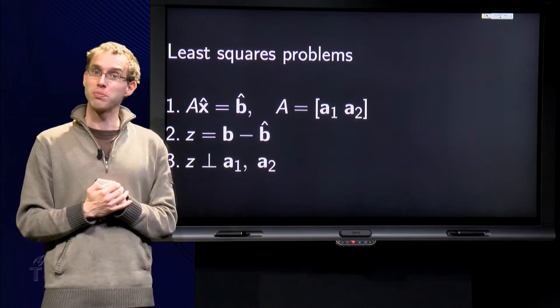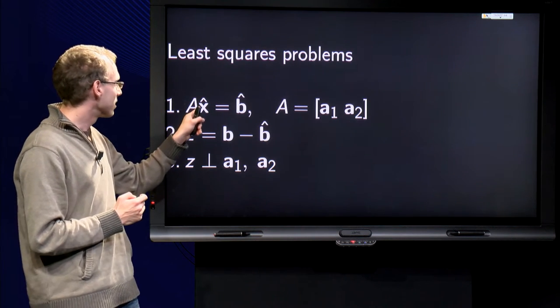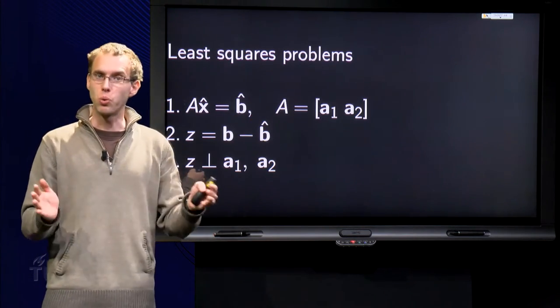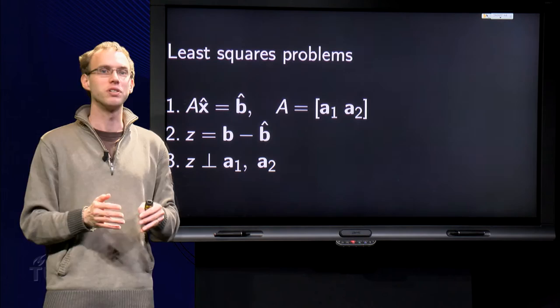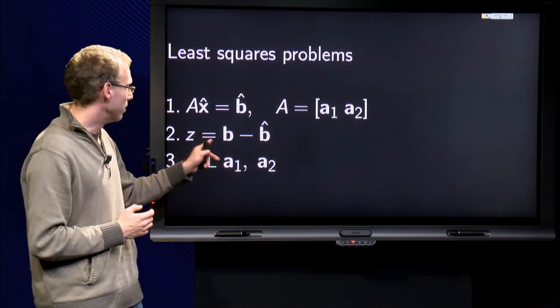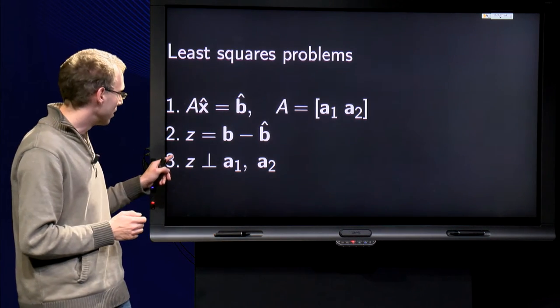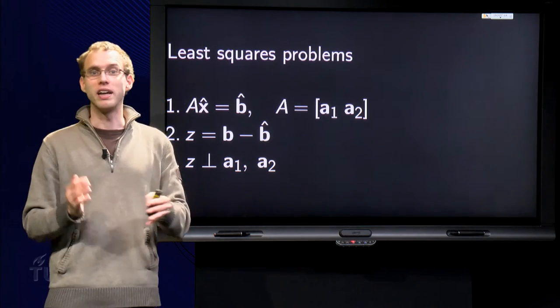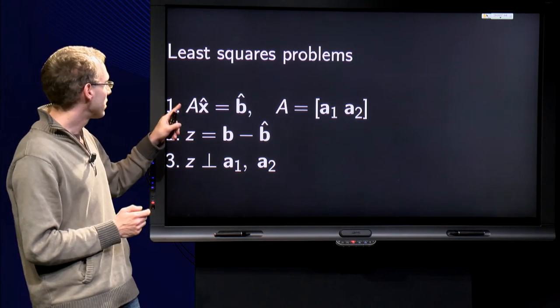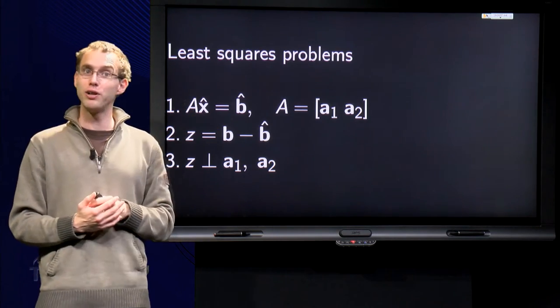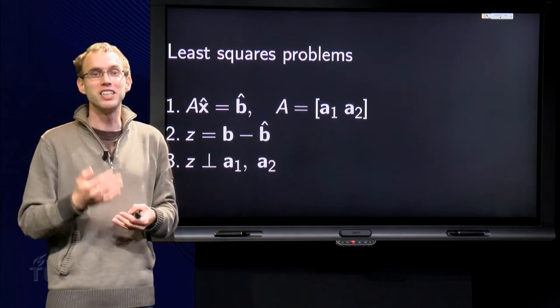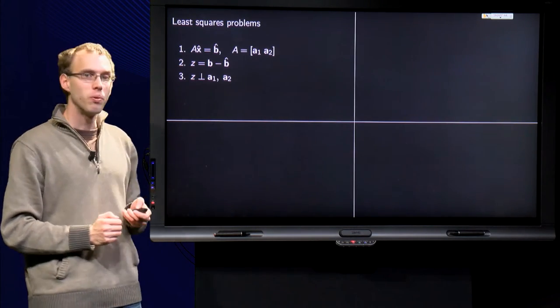So, what is our least squares problem? We have A times x hat equals B hat, where A is a matrix with two columns. Again it doesn't matter if A has more columns, you have the same principle. We have our z equals B minus B hat and we know that z is orthogonal to A1 and A2. That is the input we use and we want to find eventually x hat. Problem is, here x hat and B hat are unknown and here z and B hat are unknown. So until now we have no equation where only one unknown is present.